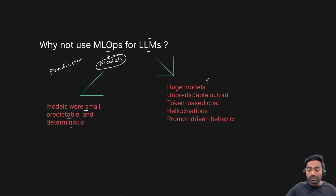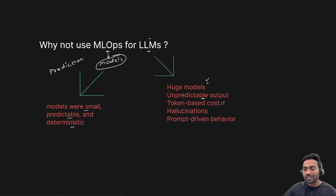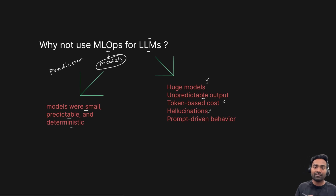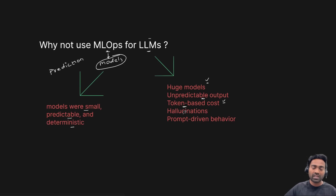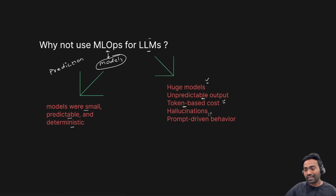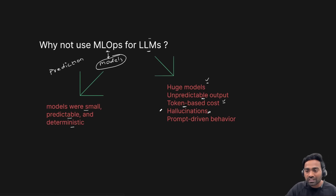On top of that, these models are different from traditional models because the output is unpredictable. Also, LLMs are not very cost effective — if you don't deal with large language models in the right way, whether it's building, deploying, or setting up infrastructure for them, you will end up spending a lot of money, because everything depends on tokens and requests. Also, large language models deal with hallucination, and it is the responsibility of the LLMOps engineer to reduce hallucination.